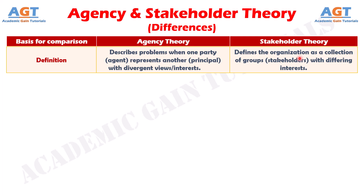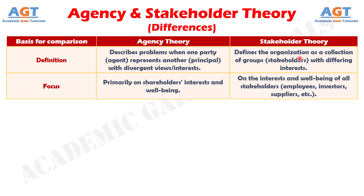Number two: agency theory prioritizes maximizing shareholder value, whereas stakeholder theory seeks to balance the interests of all parties involved with the organization.